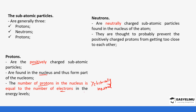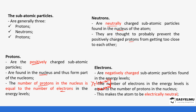Neutrons are neutrally charged — they have no charge and are found in the nucleus of the atom. They are thought to prevent the positively charged protons from getting too close to each other, since like charges repel. Electrons are negatively charged and found in the energy levels. The number of electrons always equals the number of protons, which is why we call a neutral atom electrically neutral — that is, an atom that has not lost or gained any electrons.